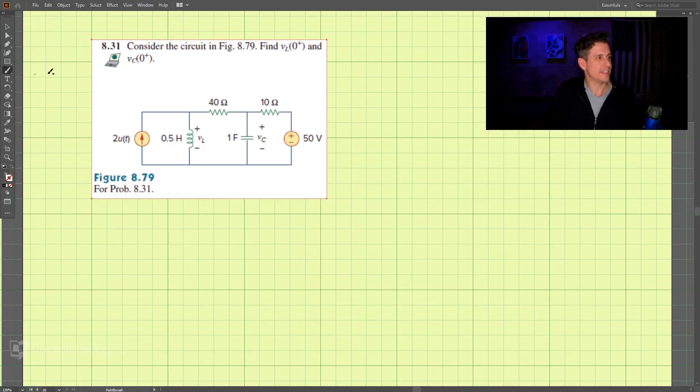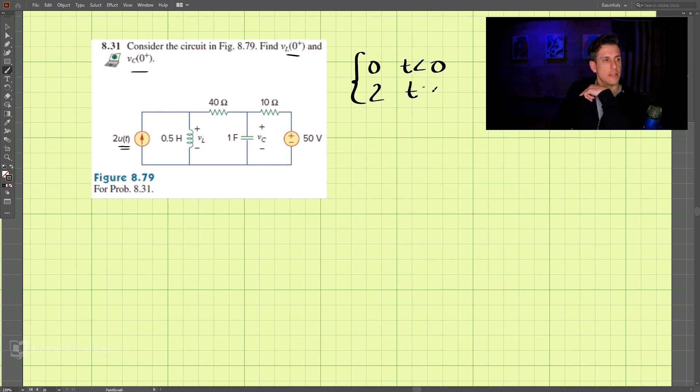This is problem 8.31, and we're looking to find VL(0+) and VC(0+). We have this constant voltage source, but then we have a unit step function, so that means this source is 0 for t less than 0, and 2 if t is greater than 0.